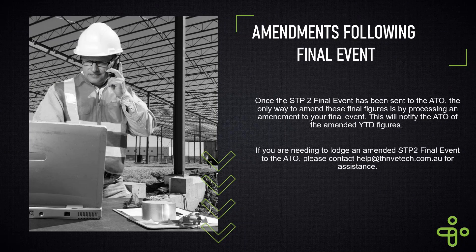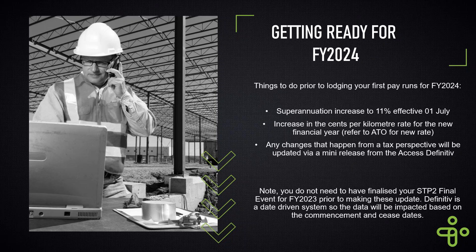If you require any amendments following the final event, you may receive email notifications back from the ATO. We talked about having the correct notification set up so that somebody gets an alert - the ATO will come back to you if something's not right. If you need help with those amendments, please reach out to us at help@thrivetech.com.au, as there are many variables and we can access a list of potential error messages to help you troubleshoot.